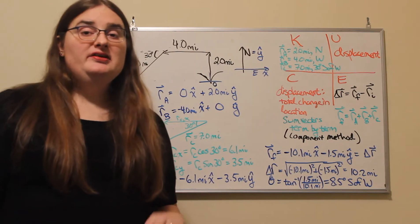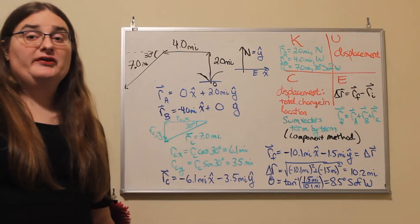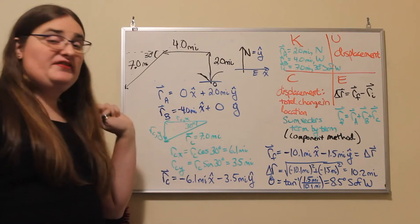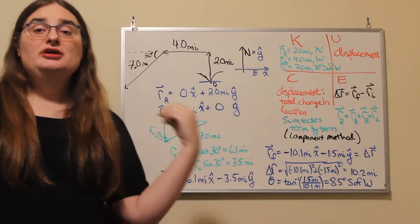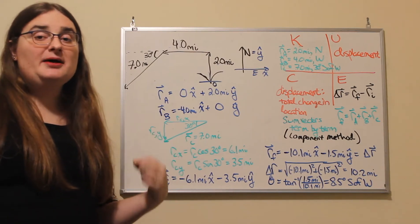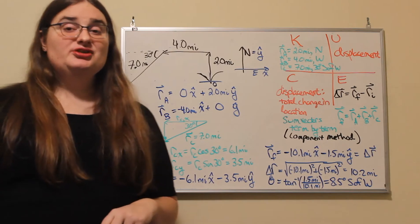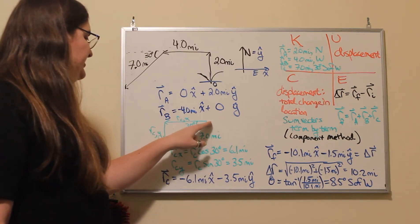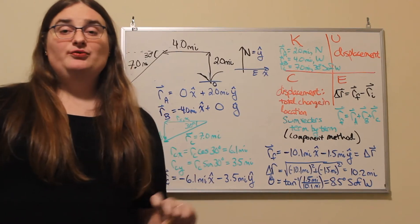Now the last part involves motion that is both to the west and to the south. So ultimately, I would have a negative x direction and a negative y direction for the components that make up that third vector rC. And to find the size of those components, I can take my vector rC drawn as seven miles, 30 degrees south of west.